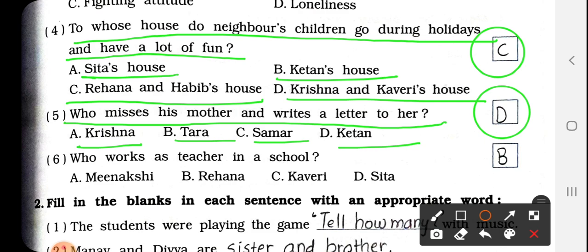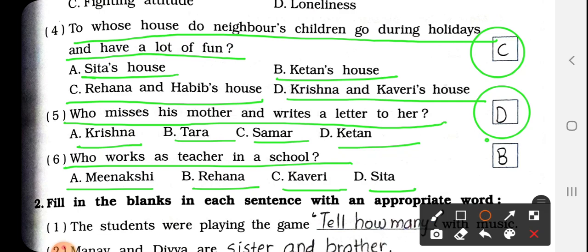Next, number 6: Who works as a teacher in school? School में as a teacher कौन काम करता है? Options: Meenakshi, Rehana, Kaveri, and Sita. So answer is B — Rehana. We have to write here B.